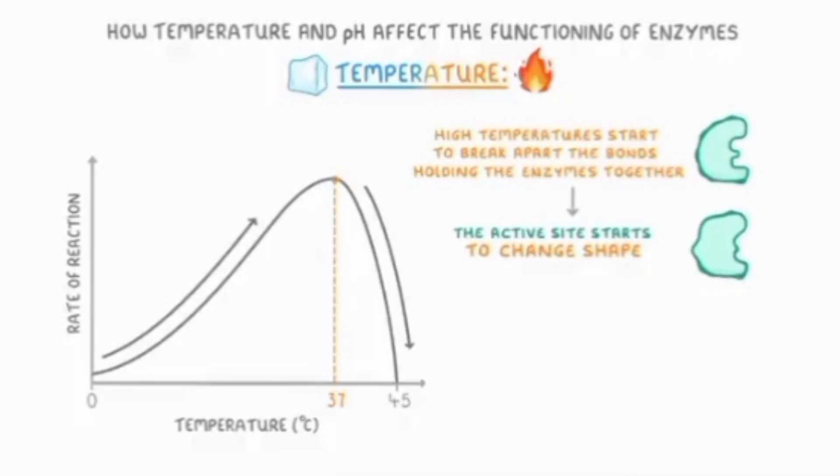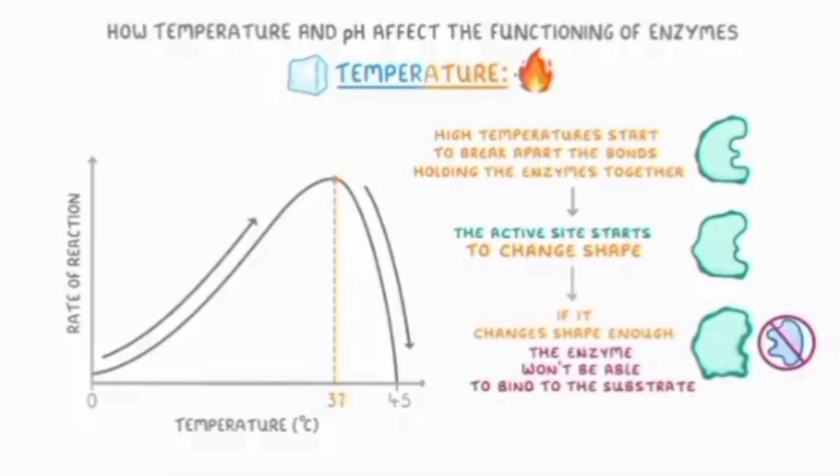If the enzyme shape has been disrupted enough, then the substrate is not going to be binding and the reactions will not be catalyzed. And at this point, we say that the enzyme has been denatured. In this case, the enzyme is denatured around 45 degrees centigrade. At this point, the enzyme has become permanently damaged.